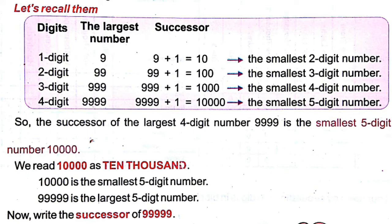The largest two-digit number is 99. The successor of 99 is 100, which is the smallest three-digit number. So 99 is the largest two-digit number and the successor of 99 is 100, which is the smallest three-digit number.